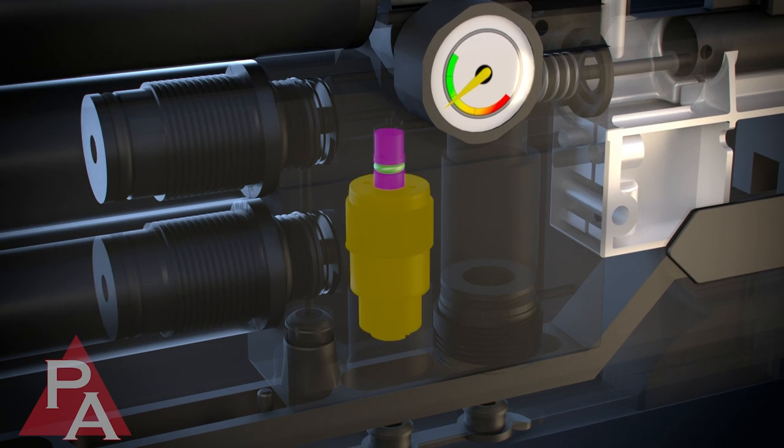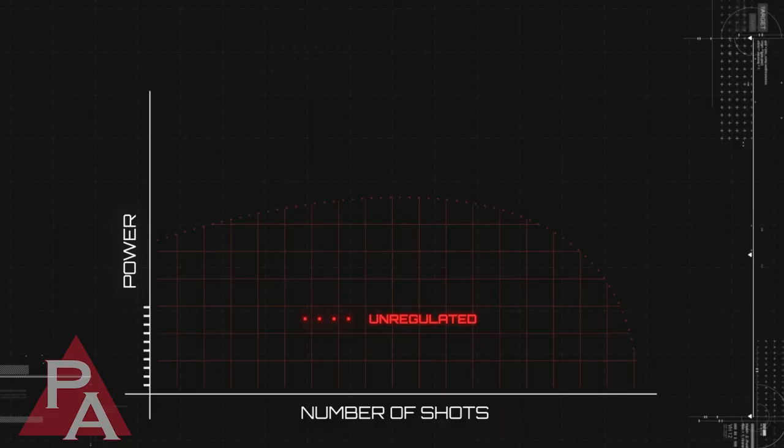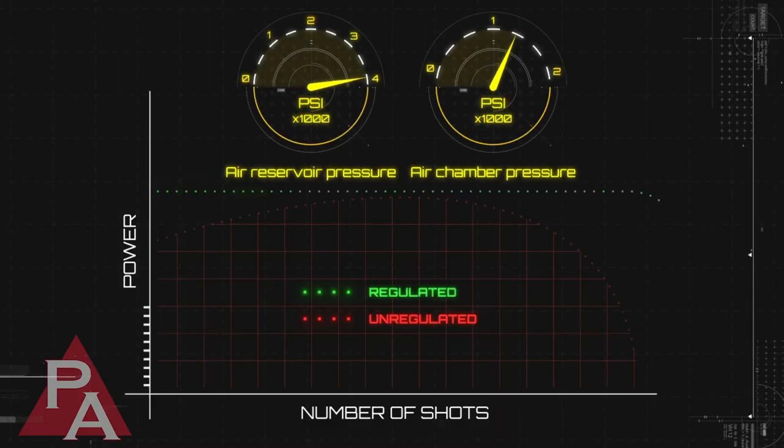Because of this, many air gun manufacturers incorporate an air regulator into their guns. In a regulated PCP, the power output stays consistent throughout its entire air charge.